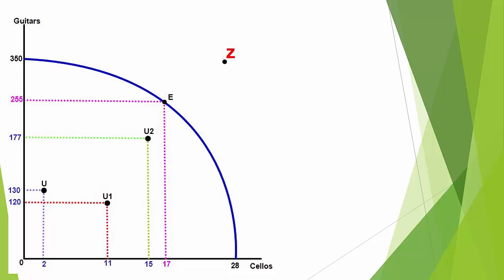We now look at areas within and outside the PPF. Some exam boards ask: what is the opportunity cost of choosing to produce 350 guitars? Assuming that's an initial position, the next best alternative would be to devote all of the country's resources to producing cellos. The opportunity cost of producing 350 guitars is therefore 28 cellos.